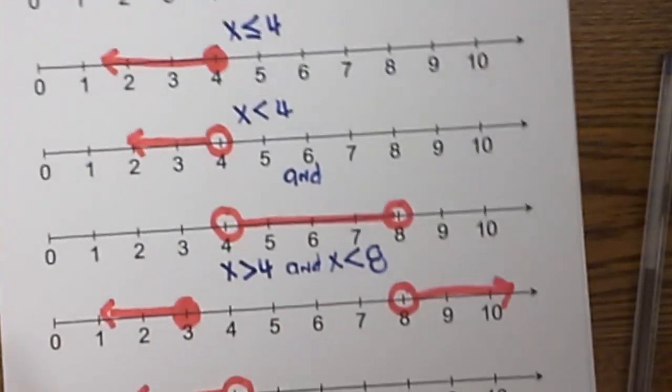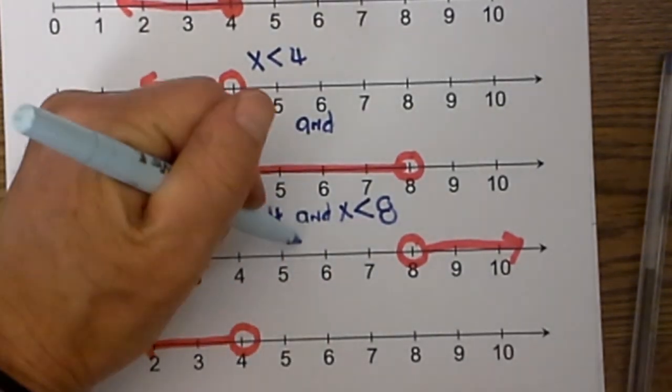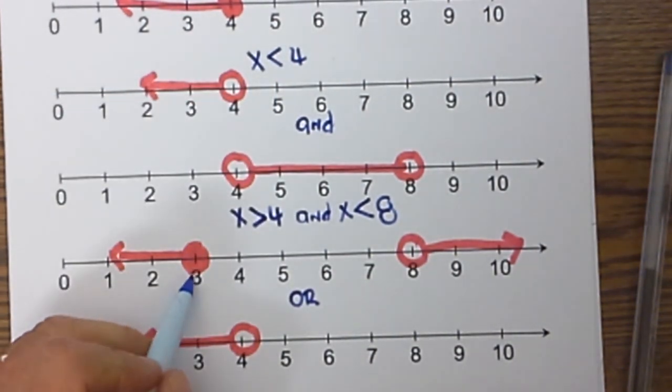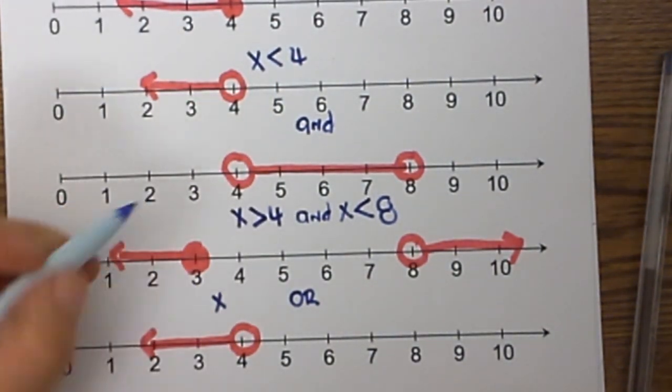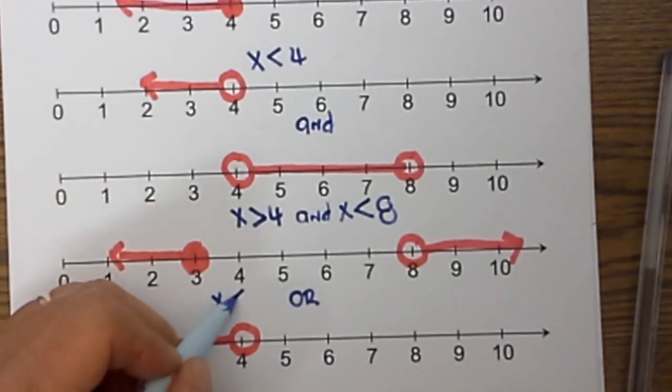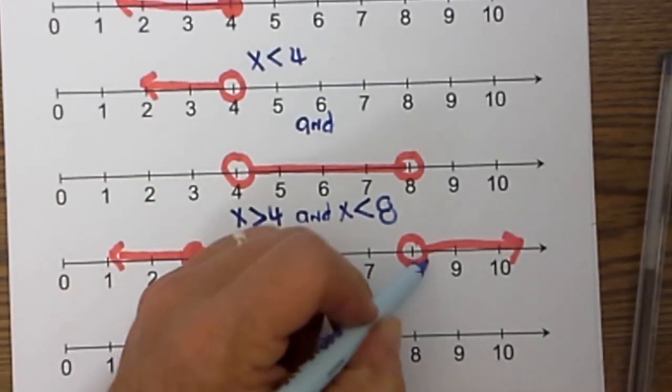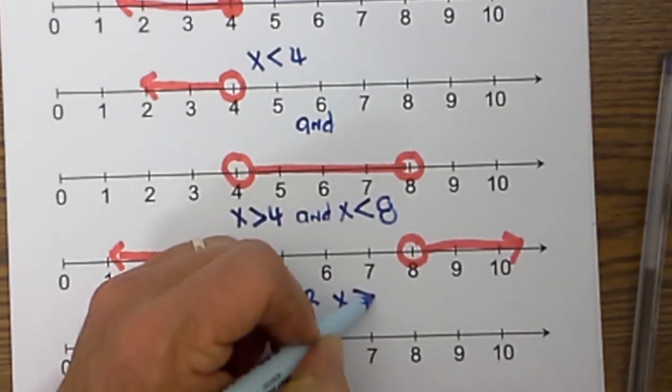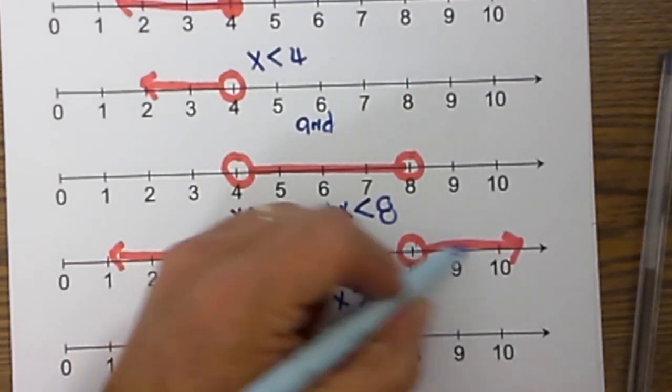Now let's move to the next example, and it uses the word OR, so it is going to be x is less than or equal to 3 or x is greater than 8.